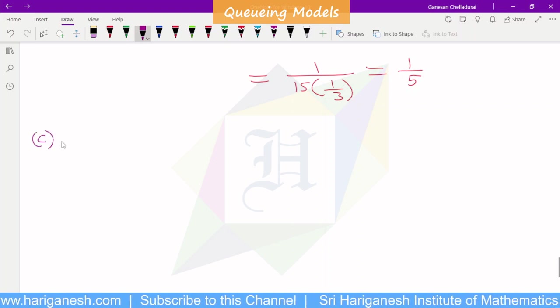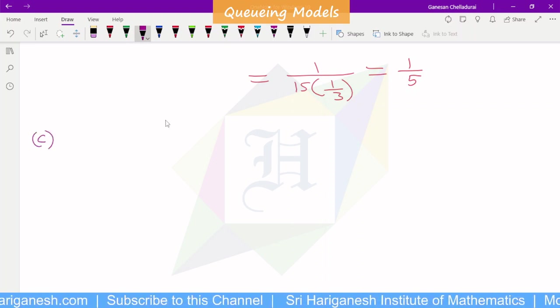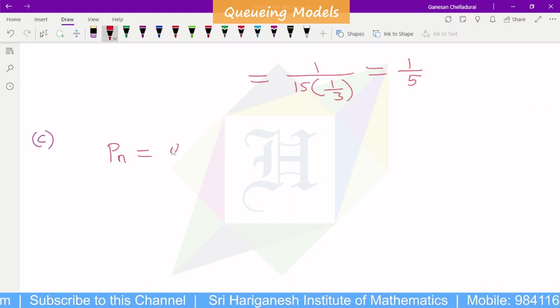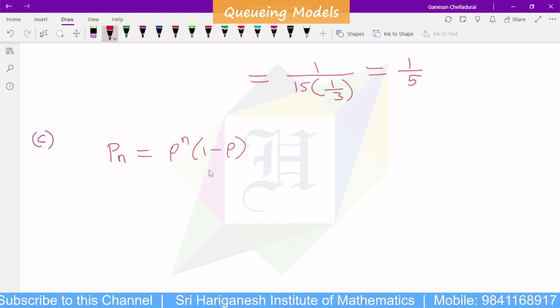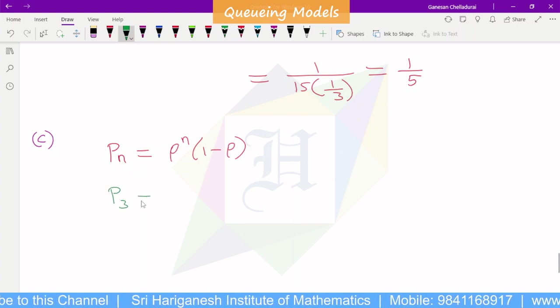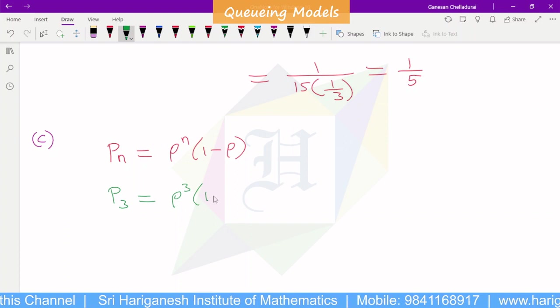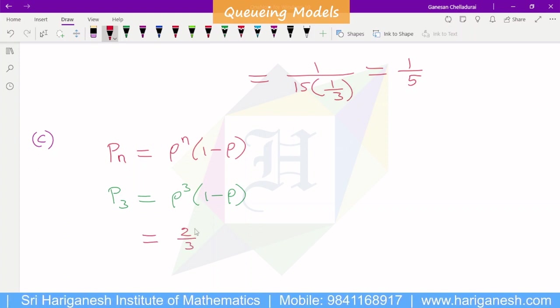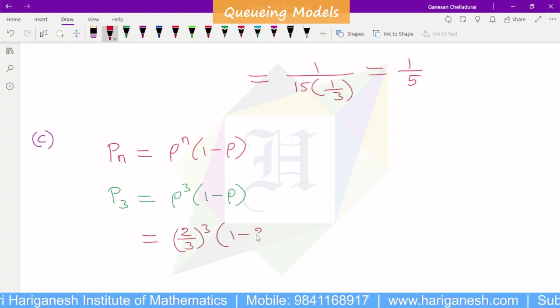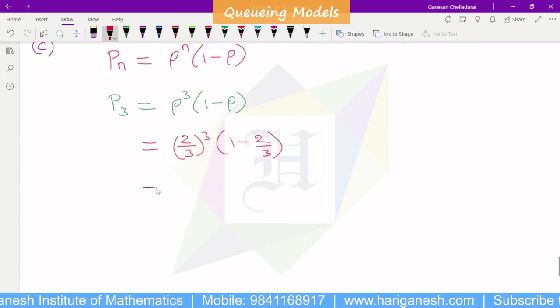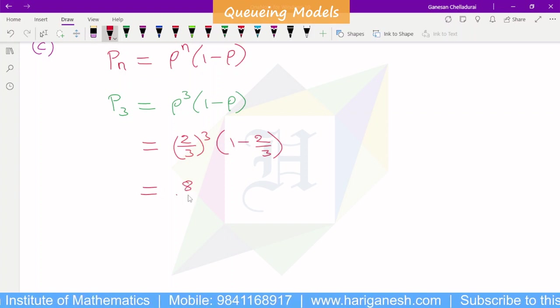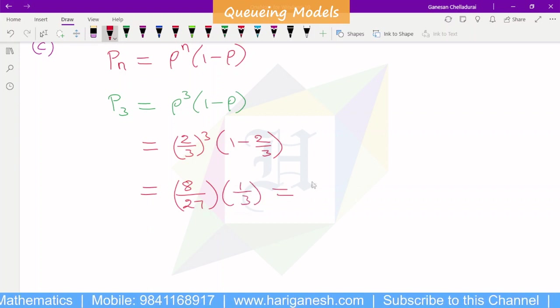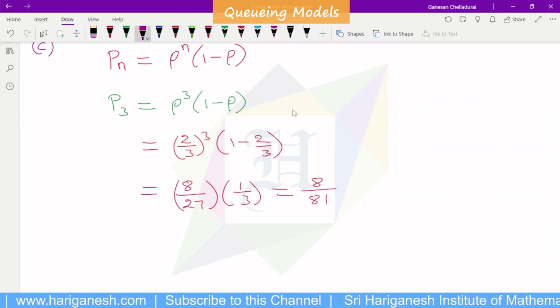C is P3. P3, model 1 formula Pn is rho power n into 1 minus rho. P3, rho power 3 into 1 minus rho. Rho value 2 by 3, 2 by 3 into 1 minus 2 by 3. Further I will simplify: 2 by 3 the whole cube, 2 cube is 8, 3 cube is 27, this is 3 minus 2 is 1 by 3. Final is 8 by 81. P3 is 8 by 81.